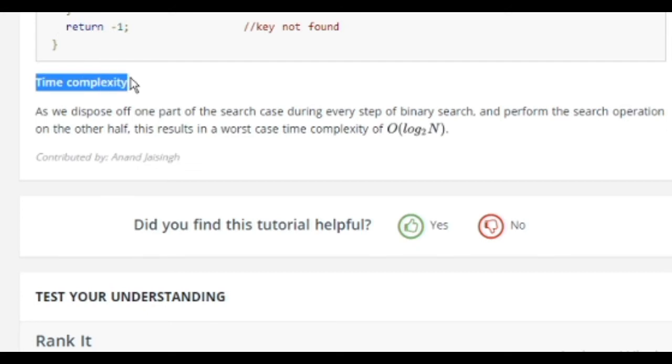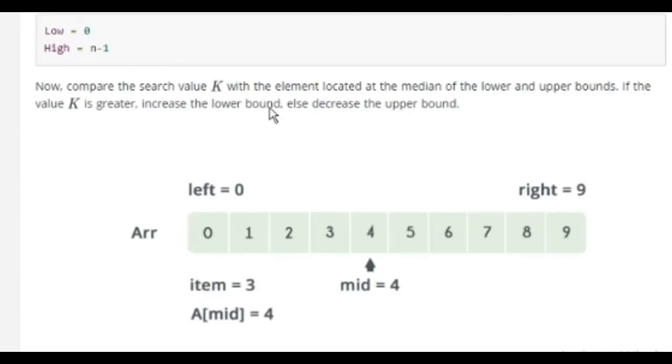This is a time complexity thing. I will talk about this later also. In this particular case, we dispose of one part of the search case during every step of binary search and perform the search operation on the other half. This is the worst case time complexity of O(log n), log base 2. We will discuss about this later on. This is how we read about binary search.